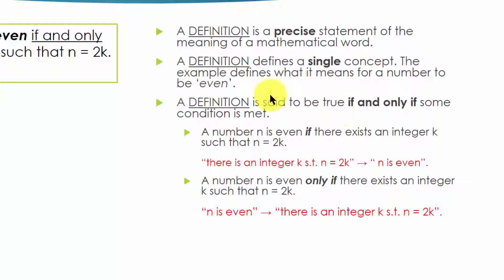Thirdly, a definition is defined by a strict term, if and only if. So a definition is true only if the condition is met in both directions. The if direction means that if there is an integer k such that n equals 2 times k, then n is even. The only if direction means the reverse direction has to be true too. So if n is even, then there is an integer k such that n equals 2 times k. You see, the if and only if term here is very important.